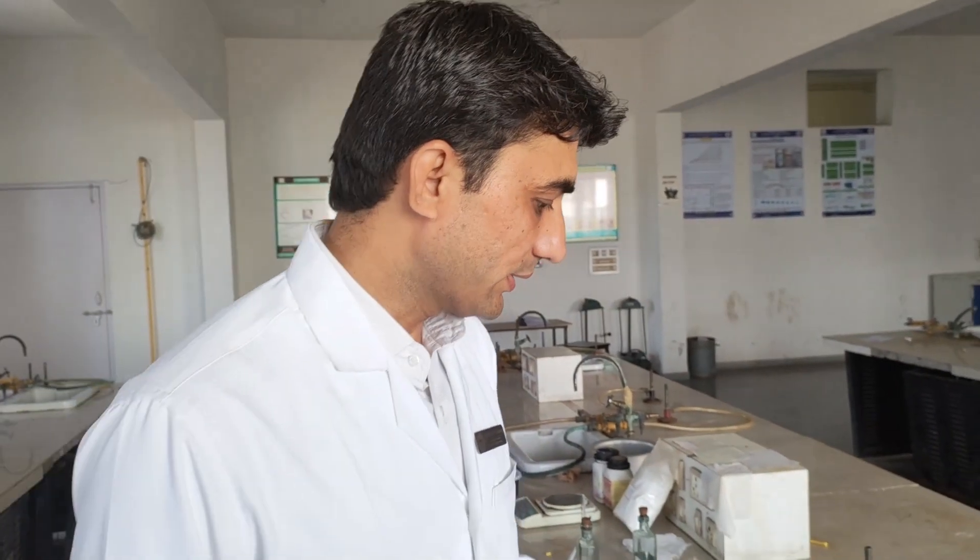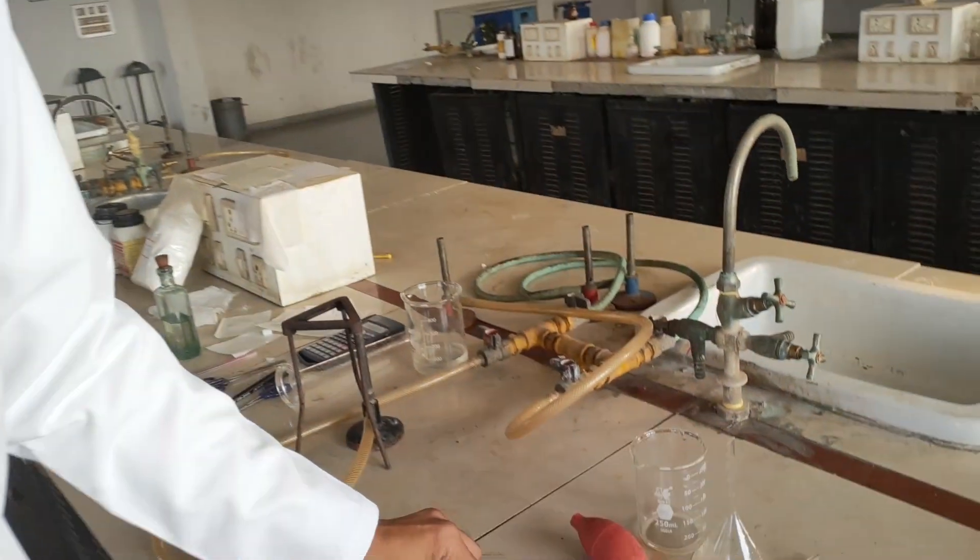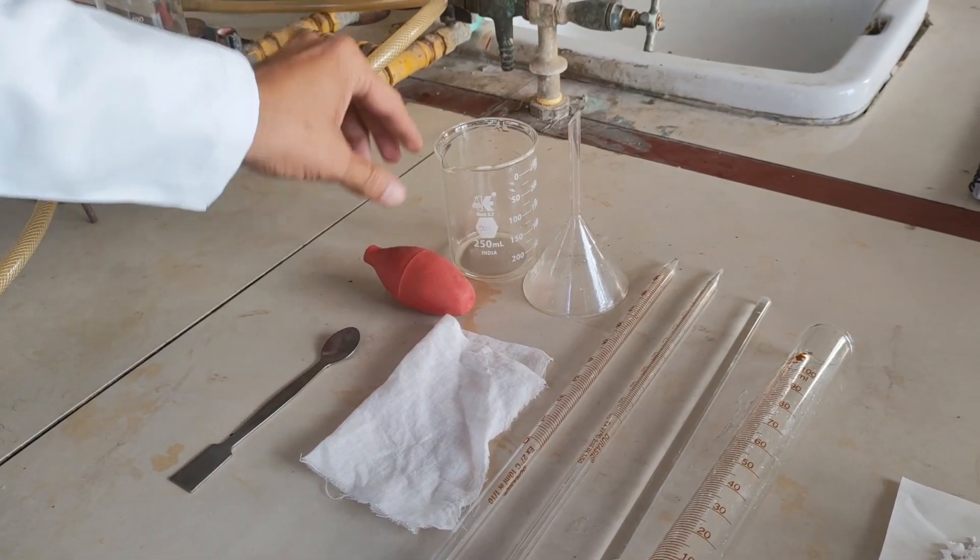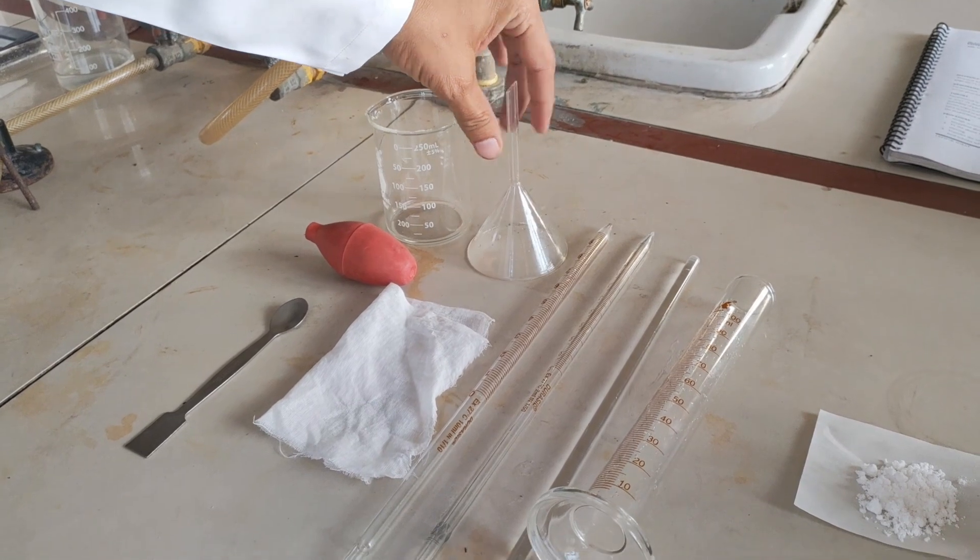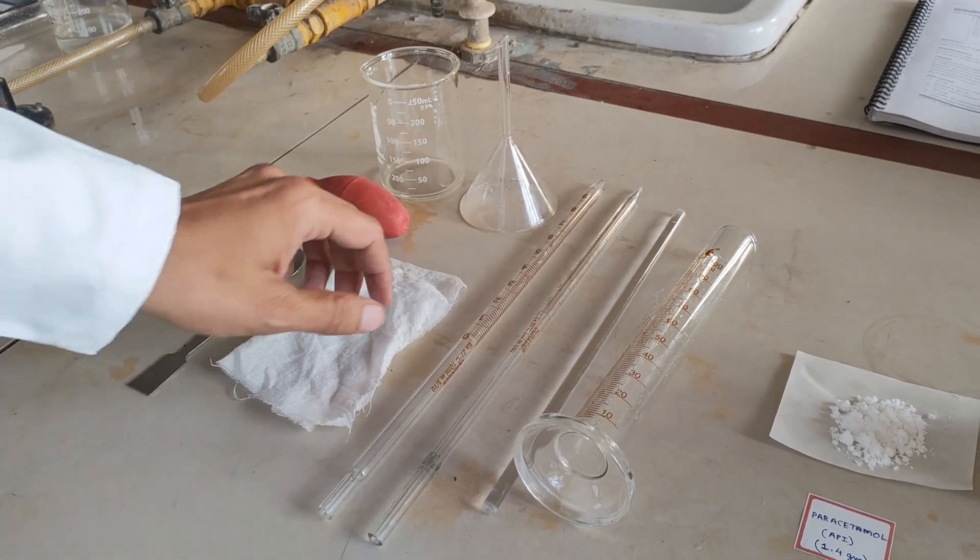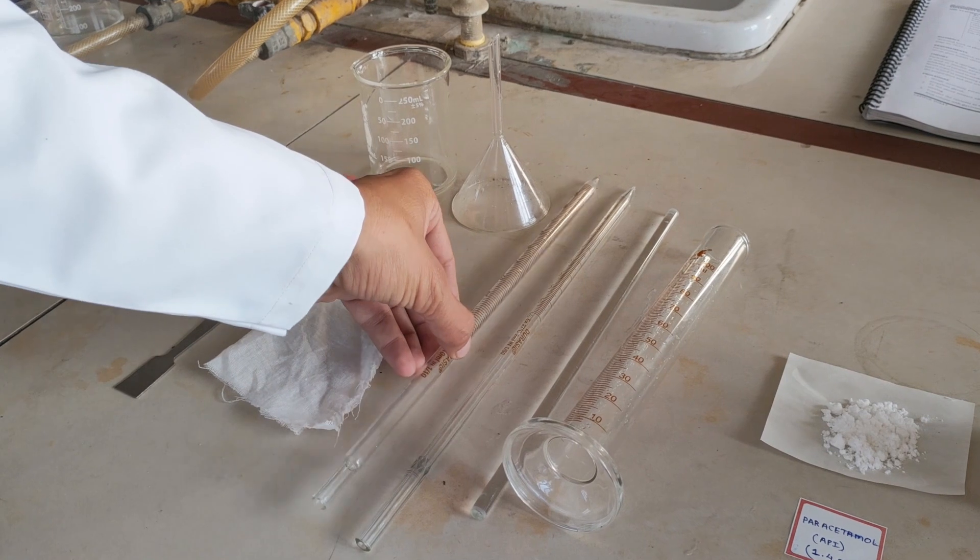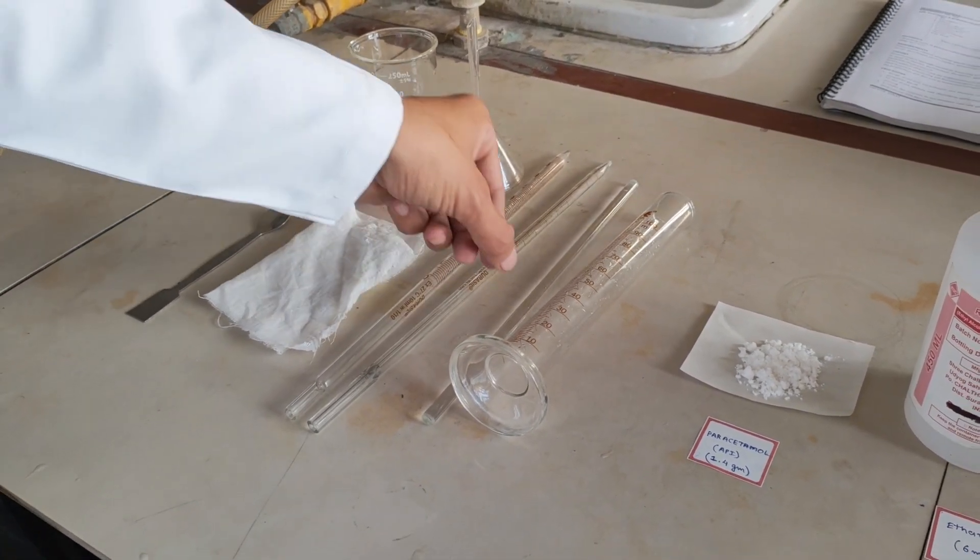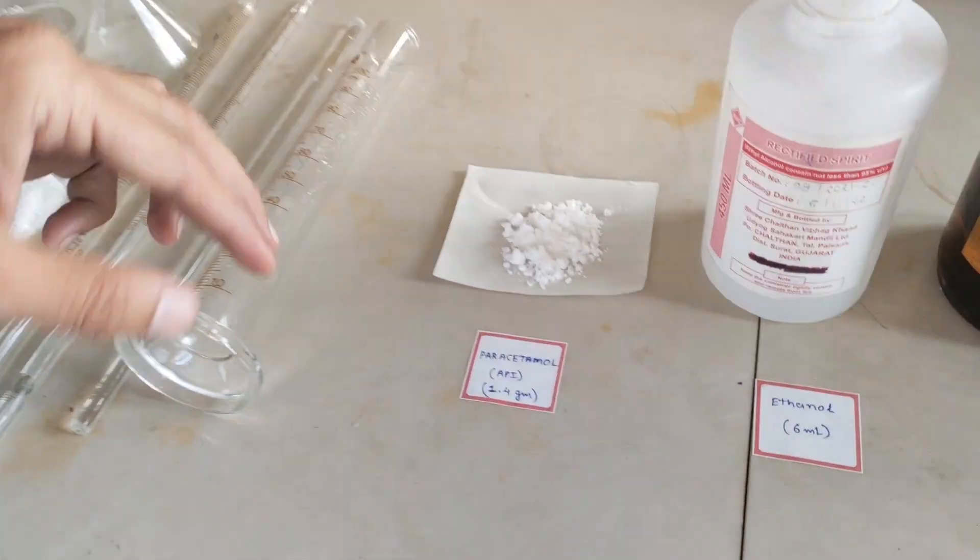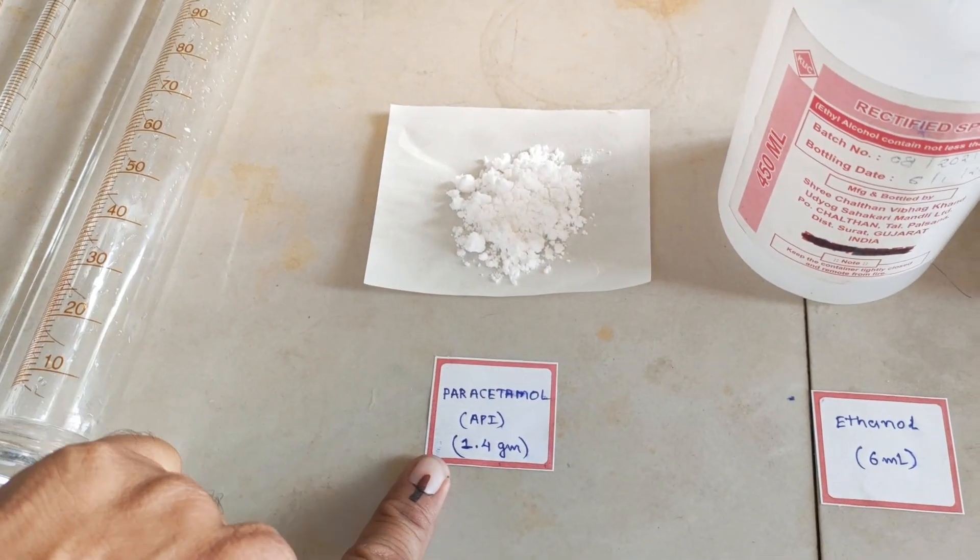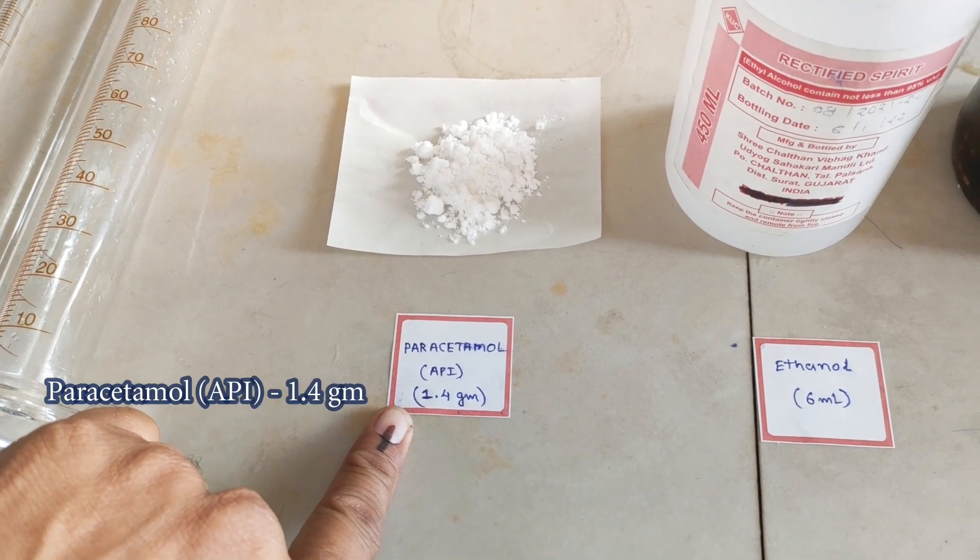Welcome everyone, today we are going to prepare paracetamol pediatric elixir. For this formulation we require spatula, beaker, funnel, muslin cloth, pipette 10ml, pipette 1ml, glass rod, measuring cylinder. Chemicals we require: paracetamol API pure drug.